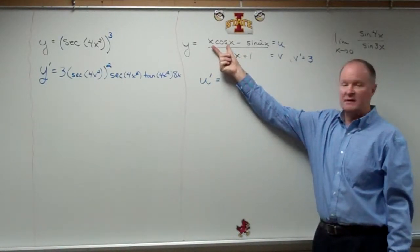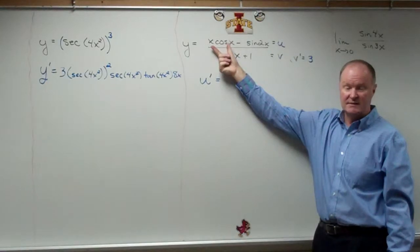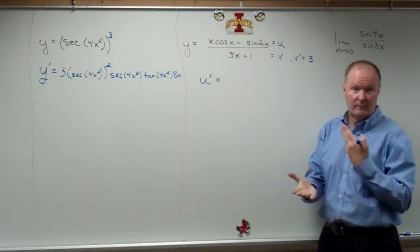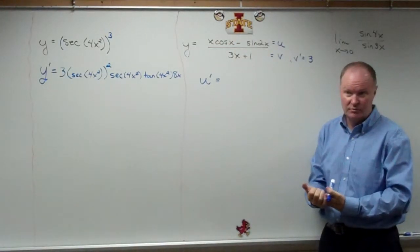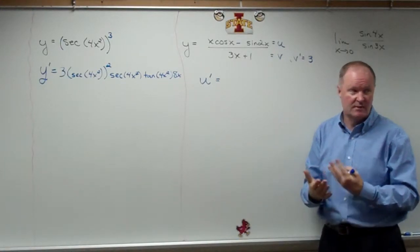To take the derivative of x cosine x. That's the product rule. Two things multiplied together.